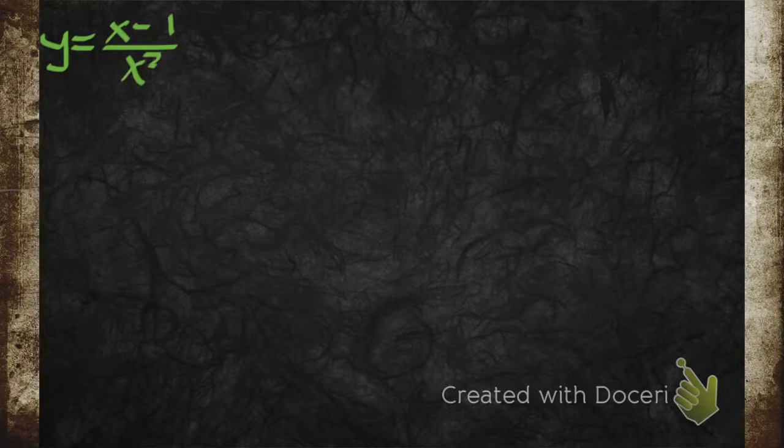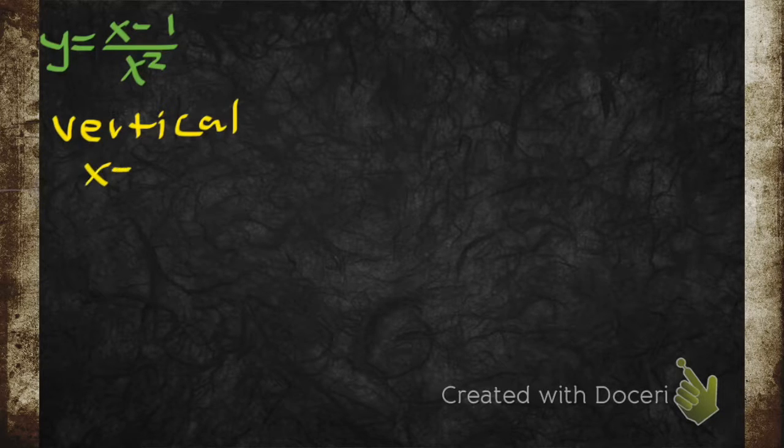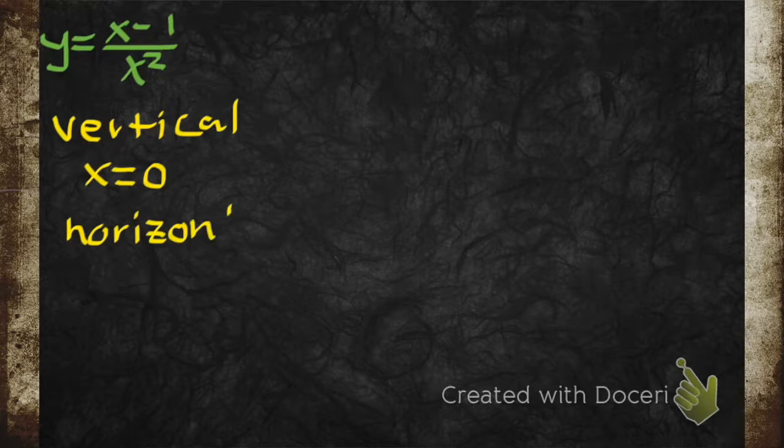Asymptotes of our function, x minus 1 over x squared. To do that, the vertical asymptote. The vertical asymptote is when x is equal to 0. Because you can never divide by 0. You can never divide by 0. So now, we're trying to find the horizontal asymptotes.